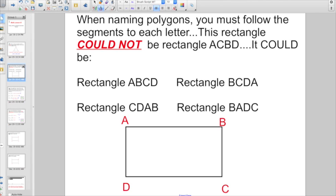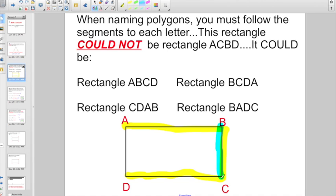Also something to know today: when naming polygons, you must follow the segments to each letter. This rectangle could not be rectangle A, C, B, D. And I'll show you here in a second why not. Because if you start at A, and you have to follow the line, there's no way to get from A to C next. You could call this rectangle ABCD, right? Or you could call it rectangle B, C, D, A, et cetera. You have to follow the lines, if you understand what I'm trying to tell you there.